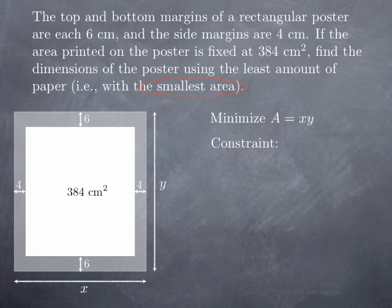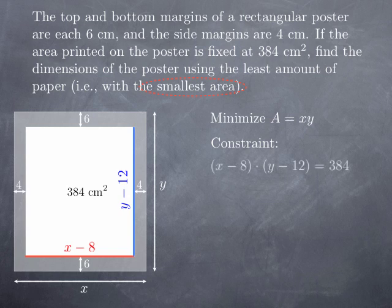The printed area is a rectangle, and so this 384 square centimeters is the product of its sides. So the red side here multiplied by this blue side should be 384 square centimeters. You see that the red side is really just the full length of the poster X minus the side margins 4 on each side. In other words, it is X minus 8. Similarly, the blue side is really the full length of the poster Y minus the top and bottom margin. In other words, it is Y minus 12. So our constraint can be expressed as (X - 8) multiplied by (Y - 12) should be equal to 384.